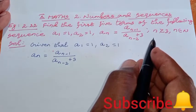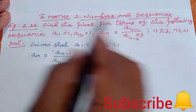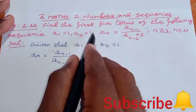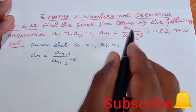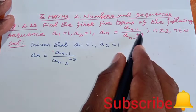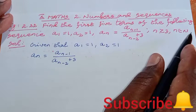Example 2.22. See the question? Find the first 5 terms of the following sequence: a₁ = 1, a₂ = 1, aₙ = (aₙ₋₁)/(aₙ₋₂ + 3), n ≥ 3, n belongs to N.